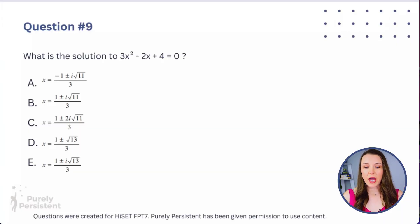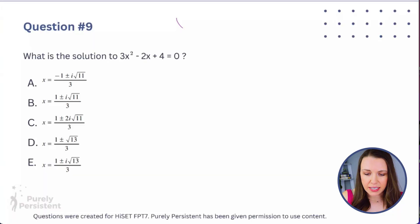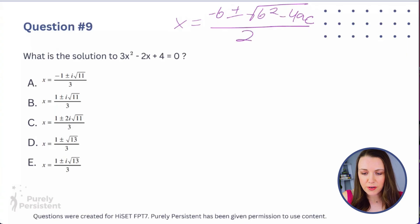Question number nine: what is the solution to 3x² minus 2x plus 4 equals zero? This may look a little bit scary. We are doing the quadratic equation, and I actually have a whole lesson for this inside my membership, Purely Persistent Academy. If you're taking the GED, the formula will be provided. If you're taking the HiSET, it will not. So you're going to want to remember the mnemonic device 'pop goes the weasel.' The formula is: x equals negative B plus or minus the square root of B squared minus 4AC, all over 2A.